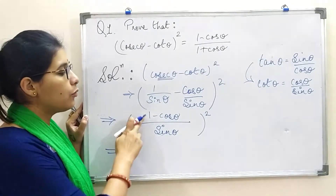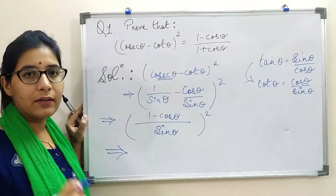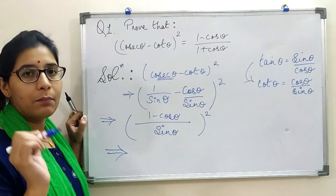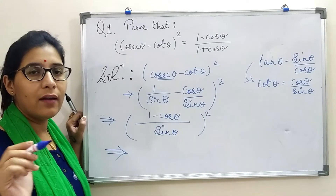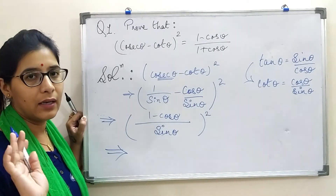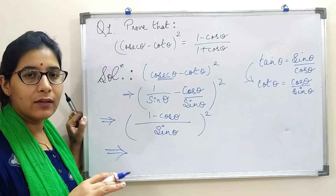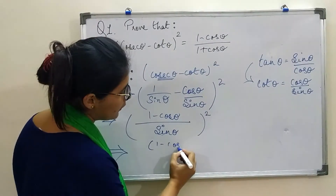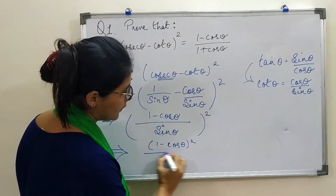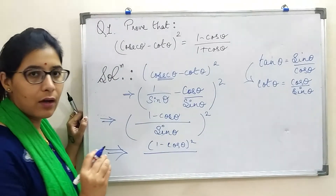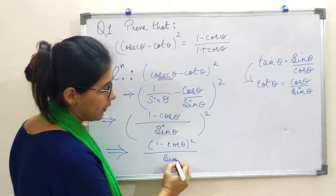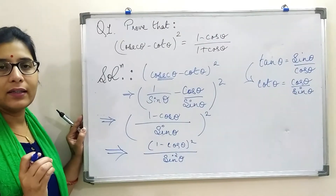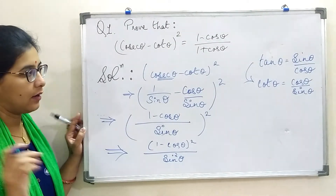In the next step, I will separate the numerator and denominator. This whole square, which is currently (n/d) whole square, I will convert to numerator squared upon denominator squared — squaring the numerator separately and denominator separately. So this becomes (1 minus cos theta) whole square as the numerator, and the denominator gets its square, that is sin squared theta.